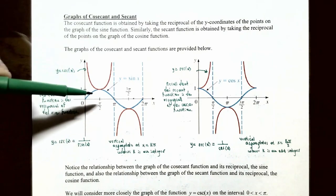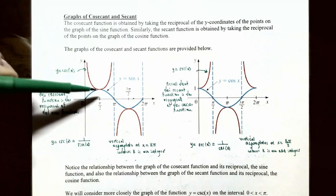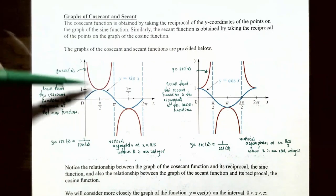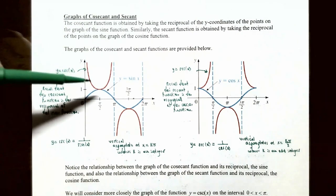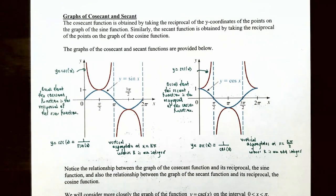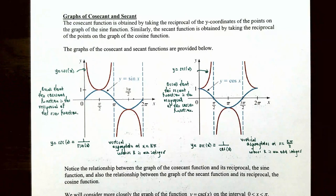As you get closer to x equals π/2, sine of π/2 is equal to 1, and the reciprocal of 1 is 1, so cosecant of π/2 is also 1. The graph will go no lower than y equals 1 between x equals 0 and x equals π. The graph increases without bound on the right side of x equals 0, increases without bound on the left side of x equals π, and goes no lower than y equals 1 at x equals π/2. Since the sine function is positive between 0 and π, the cosecant function will also be positive on that interval.